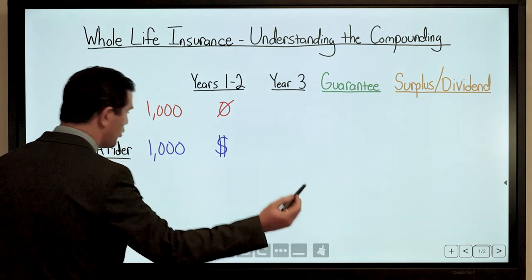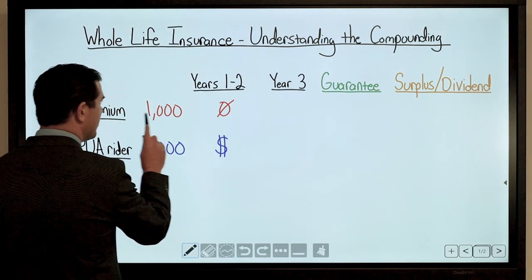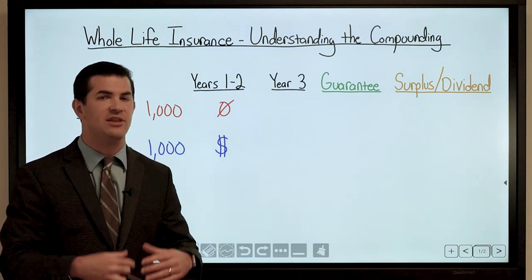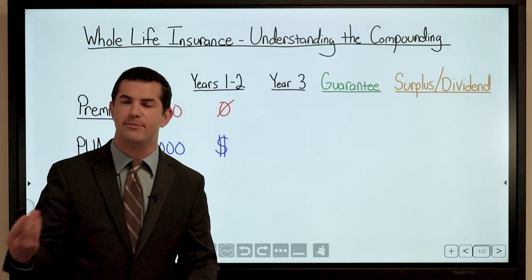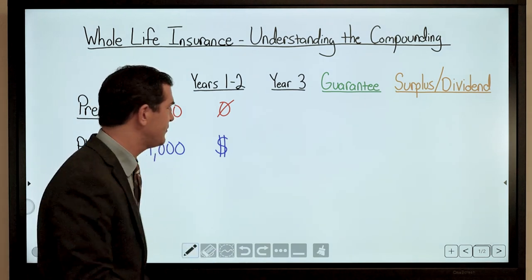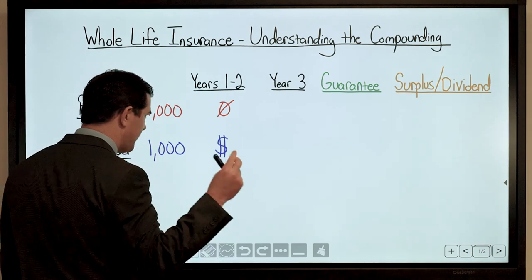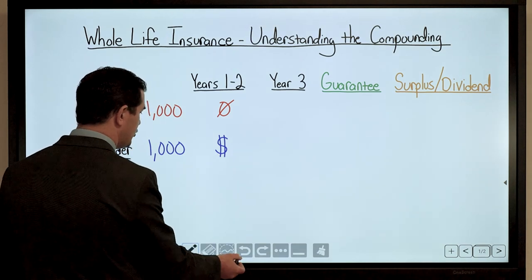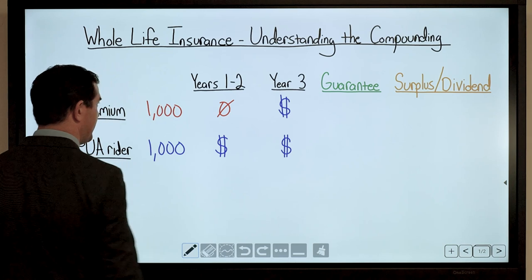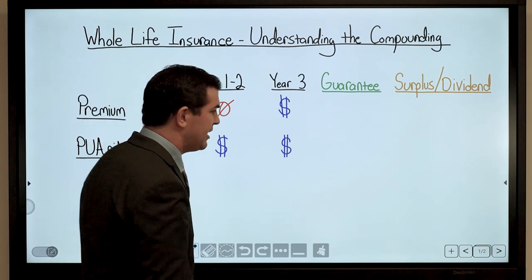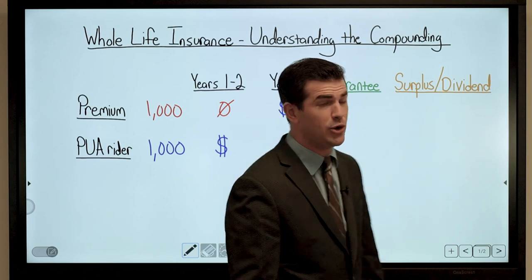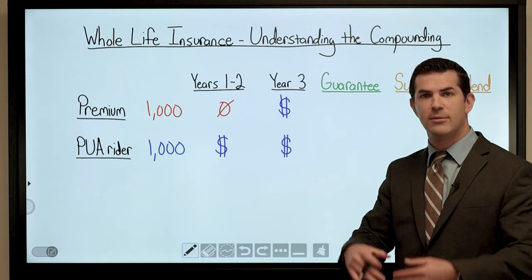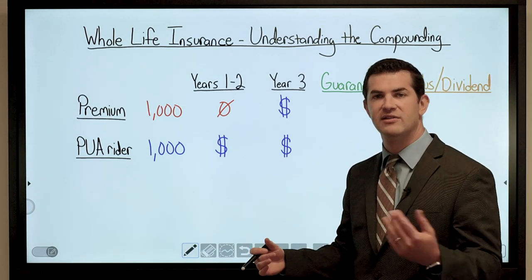In years one and two with a traditional policy, base premium dollars produce little to no cash value, because the insurance company is overcharging for the death benefit upfront. PUA dollars, however, go into cash value immediately — money you have access to that begins to compound sooner. From year three forward, both the base premium and PUA dollars show up, continue to compound, and get stronger as time passes.